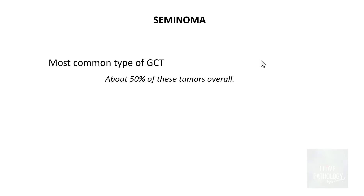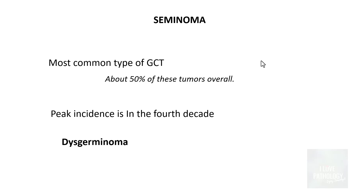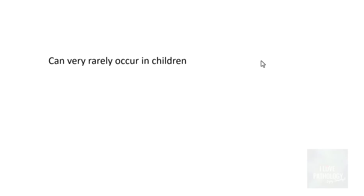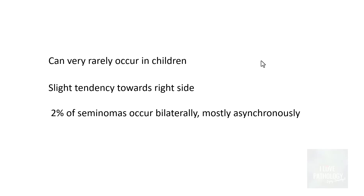Now let us look in detail at seminoma. Seminoma is the most common type of germ cell tumor, representing around 50% of all germ cell tumors. The peak incidence is in the fourth decade of life. Seminoma is the male counterpart of dysgerminoma, which arises in the ovary, and is analogous to germinoma in the CNS midline structures such as the pineal gland. Though rare, it can also occur in children. There is a slight tendency toward the right testis, and around 2% of seminomas are bilateral — almost always as asynchronous occurrences.